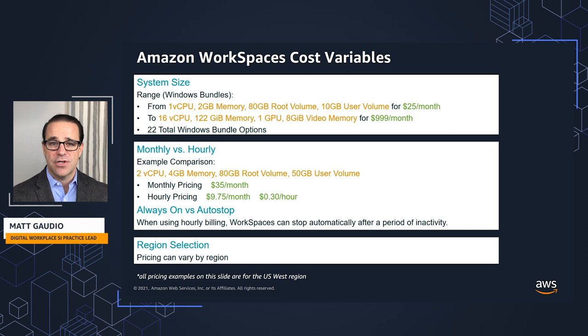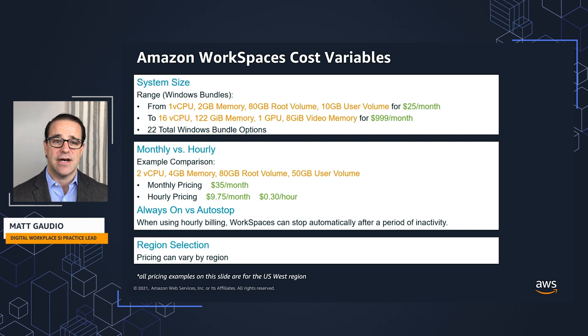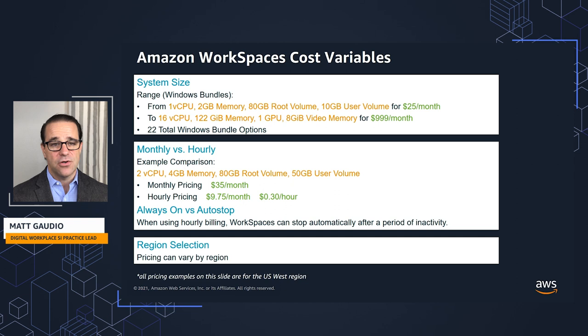Always On versus Auto Stop is another variable to consider, especially with the hourly option since it tallies over time. If I want to minimize that, I can set the workspace to Auto Stop — after a period of inactivity, the workspace will shut down and stop billing. Keep in mind, though, that when the workspace resumes you have a boot-up time — similar to shutting down a laptop completely, you'll typically need a minute or so when you come back. So if immediate access is important, don't use Auto Stop. But when saving costs and the user can wait a bit, go ahead and use Auto Stop.